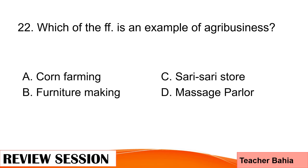Which of the following is an example of agribusiness? A. Corn farming, B. Furniture making, C. Sari-sari store, or letter D. Massage parlor? The correct answer is letter A. Corn farming.